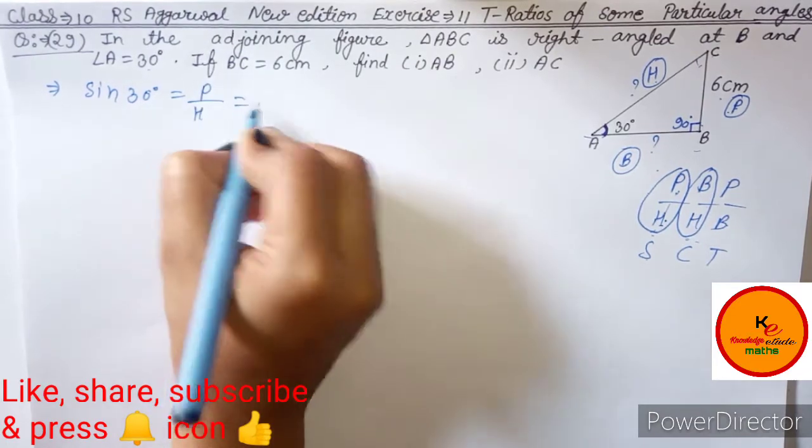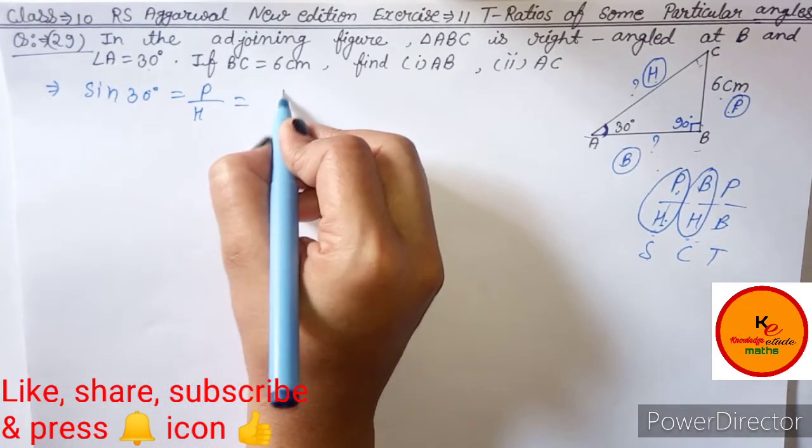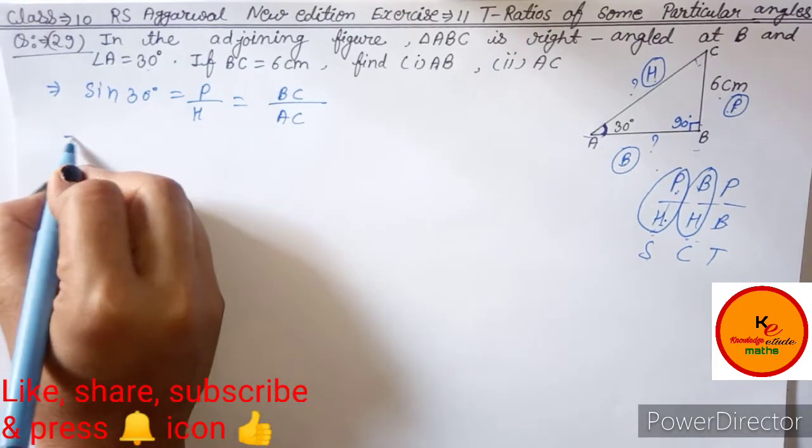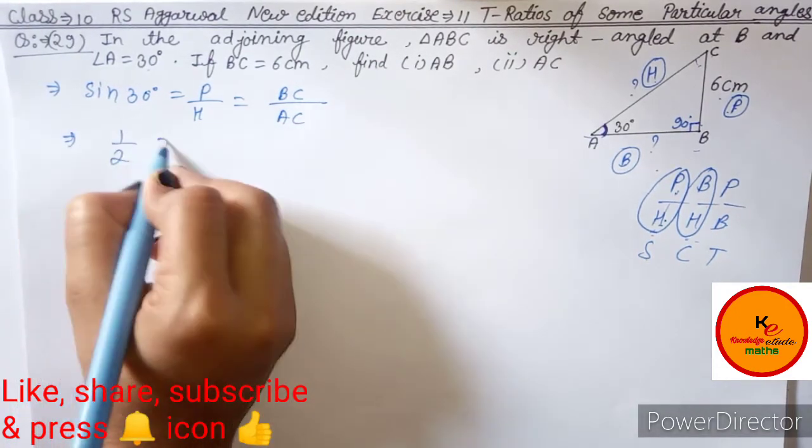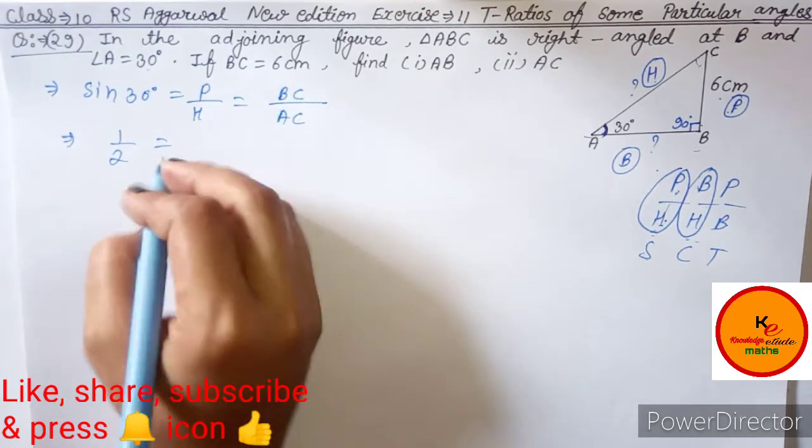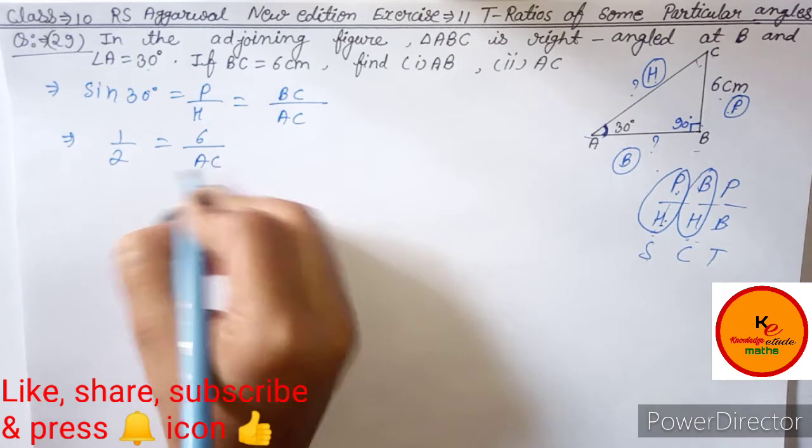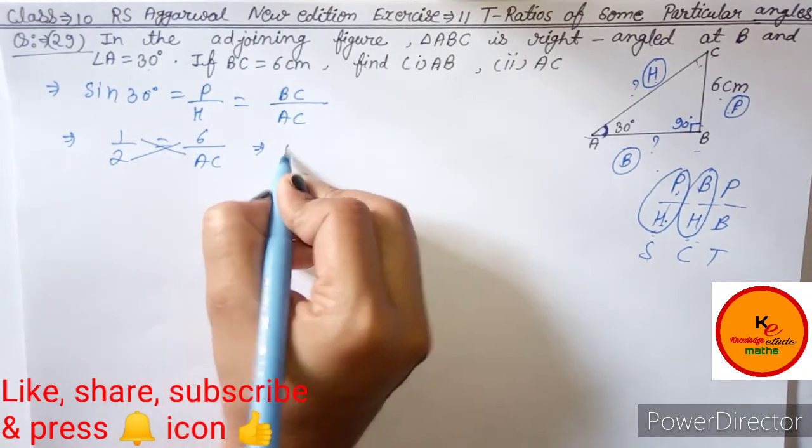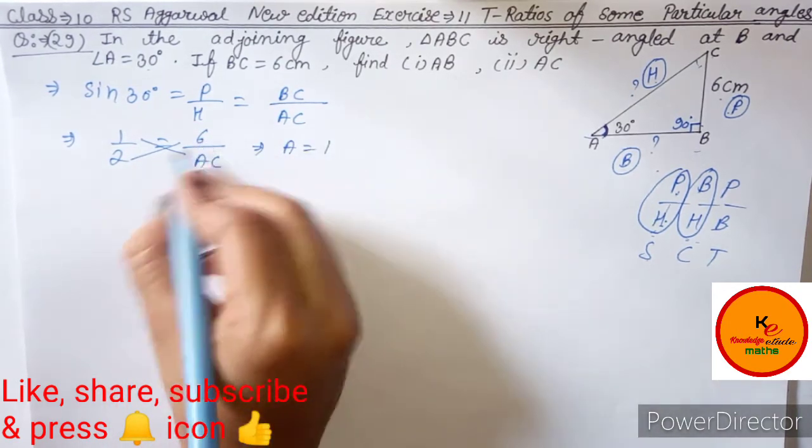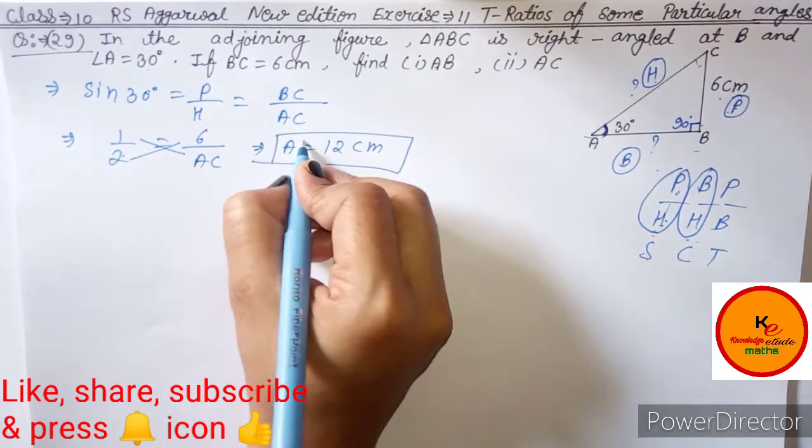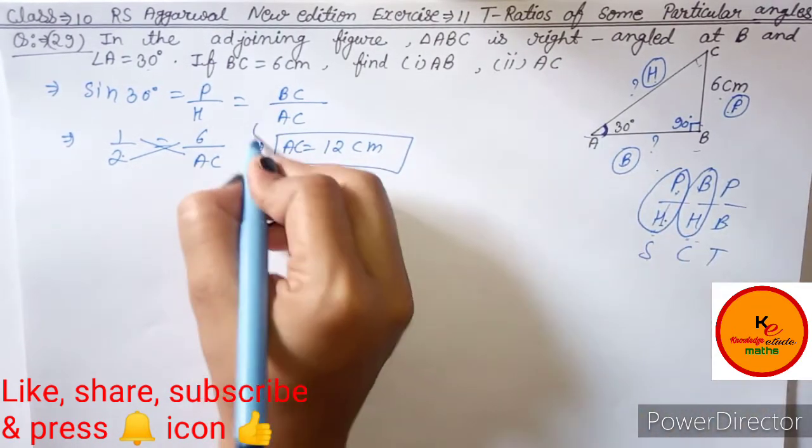Sin 30 degree is equal to perpendicular upon hypotenuse. Perpendicular is BC and hypotenuse is AC. We use sin 30 degree value, which is 1/2, equal to BC value 6 upon AC. Cross multiply: AC is equal to 6 times 2, which is 12 cm. This is your part 2.